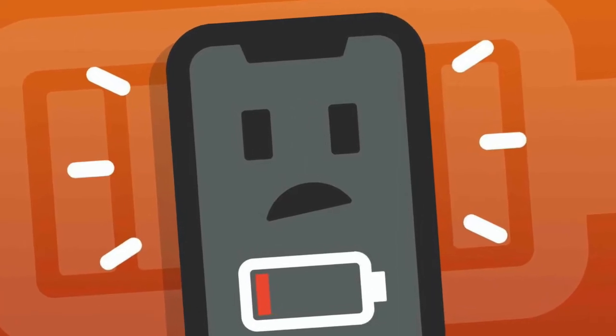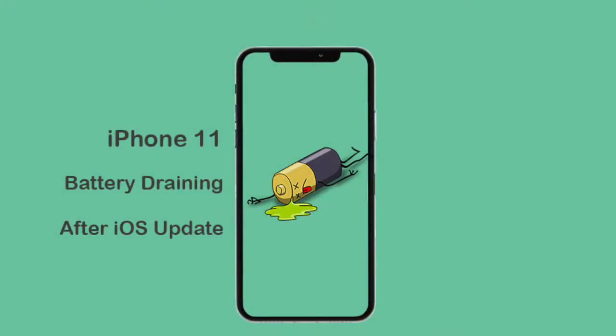iPhone battery draining fast is one of the most common problems of iPhone users across the globe. Battery life problems are usually encountered after an iOS upgrade. The poor iPhone battery performance can be tackled through factory reset, controlling the apps that consume high battery such as Uber, Google Maps, YouTube, etc. Also, uninstalling apps like Facebook and YouTube and accessing them through Safari can also considerably save your iPhone battery.